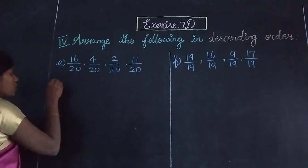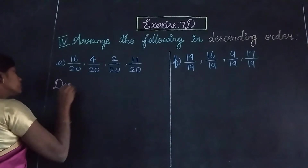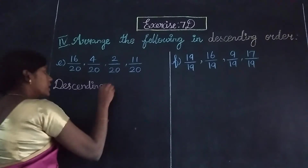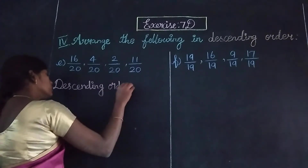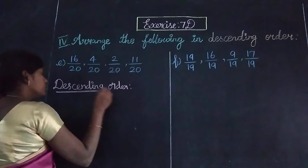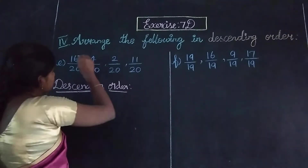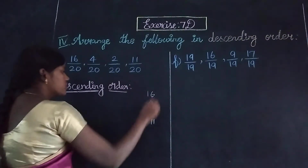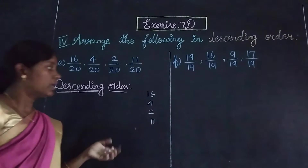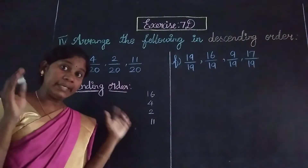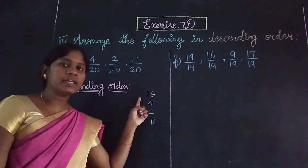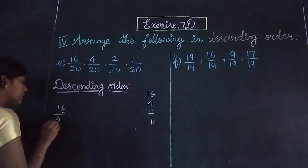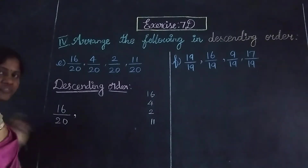So our first step is descending order. The numerators are 16, 4, 2, and 11. Here the greatest number is 16. So our first fraction is 16 by 20.